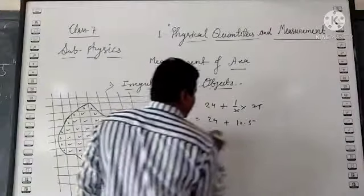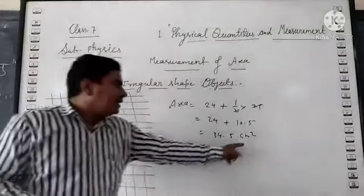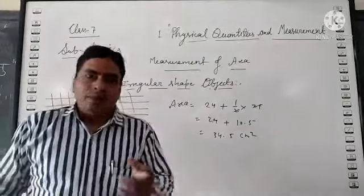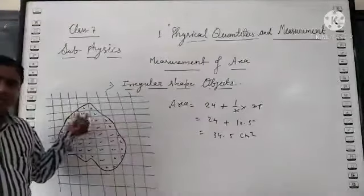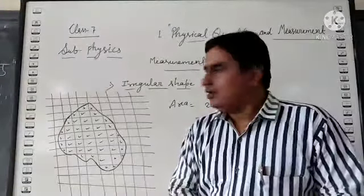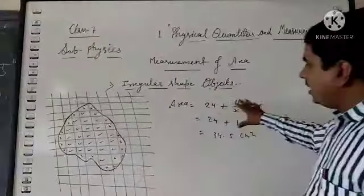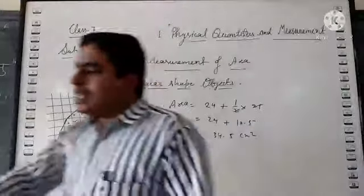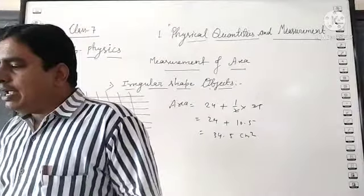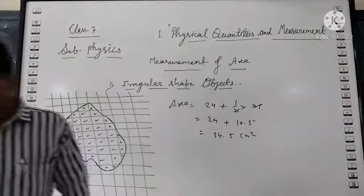So the area becomes 24 plus 21 divided by 2, which equals 24 plus 10.5, so 34.5 centimeter square. Why am I saying centimeter square? It represents the unit of area because each square block has a length of 1 cm and breadth of 1 cm. So in this way you can find the area of an irregular shape object. Clear?